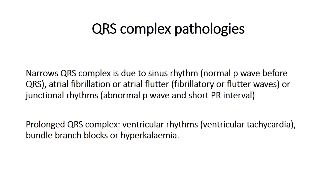An abnormal P wave indicates the impulse is coming from the atria but may be due to atrial fibrillation or a flutter wave. If there is no P wave, a very short PR interval, or a P wave very close to the onset of the R wave, this indicates excitation close to the AV node itself. So a narrow QRS may result from sinus rhythm, atrial fibrillation or flutter, or junctional/nodal excitation with a shortened PR interval.